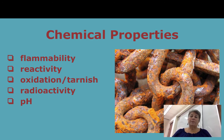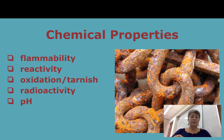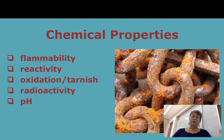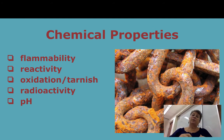Is the substance very stable? That would be the opposite of reactive. Does it go through oxidation and tarnish, like the rust on the chain you see here on the slide? Iron will oxidize — it reacts with oxygen in the air to form rust. Rust is actually iron oxide, a totally different substance than the iron and oxygen that start out to react together. Radioactivity — how does that atom break down? And pH is also a chemical property, describing how acidic or basic a substance is.